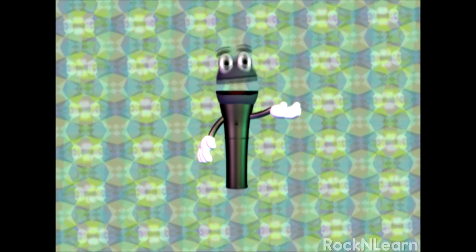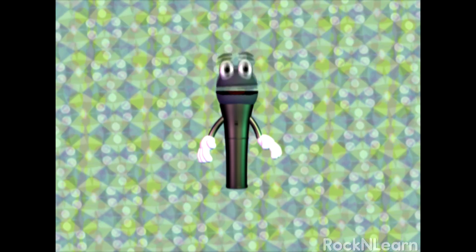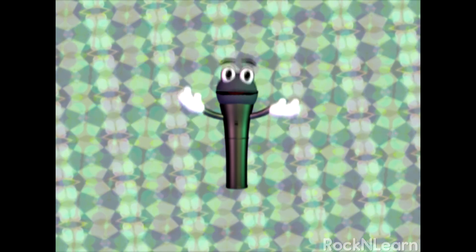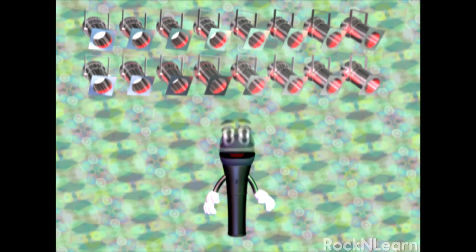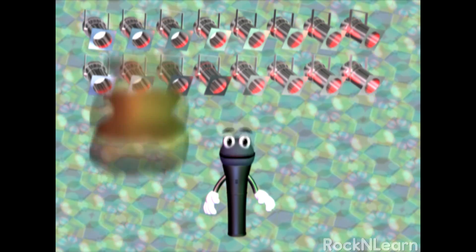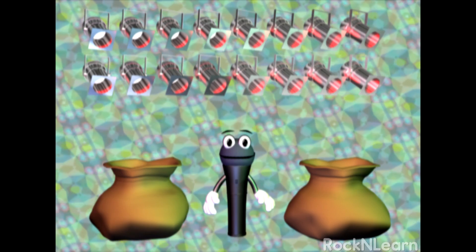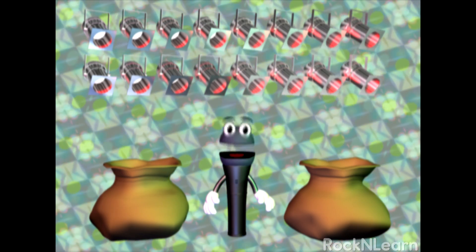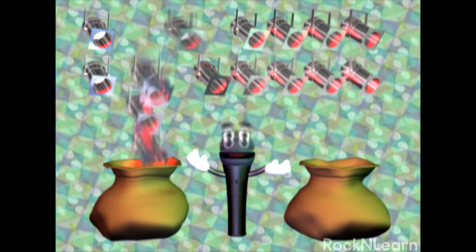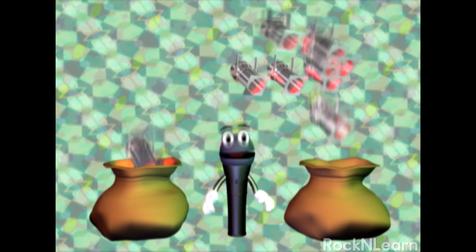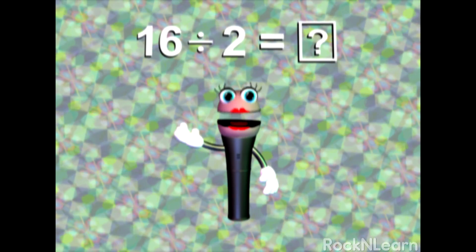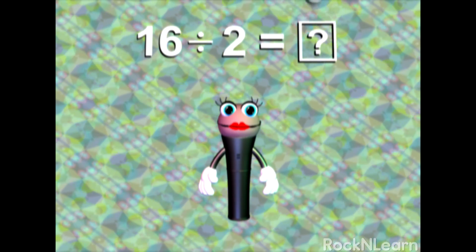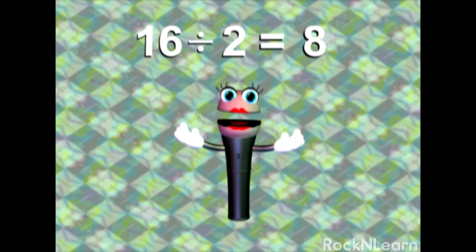After touring for a while, the Rappsters soon had 16 spotlights. Two bags held the spotlights when the band traveled. How many spotlights should go into each bag to have an equal number of lights in each bag? 16 divided by 2 equals... The answer is 8.